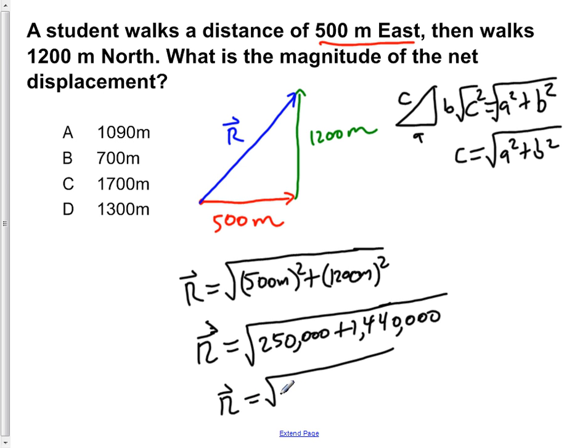If we now add those together, R is equal to the square root of 1,690,000. And if we take the square root of that, we would be left with 1,300 meters.